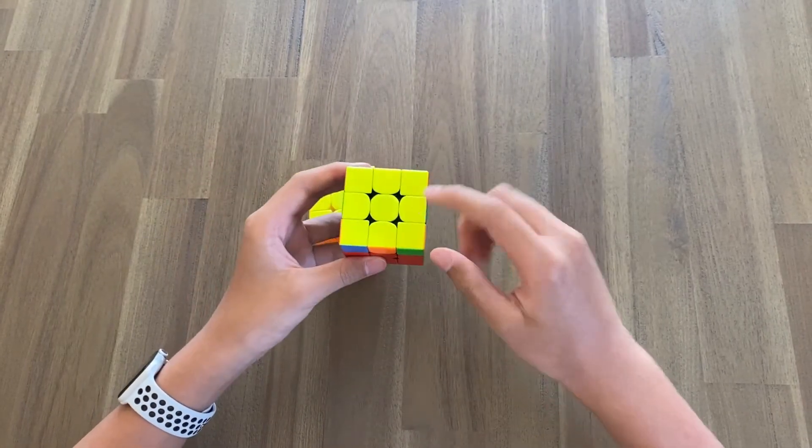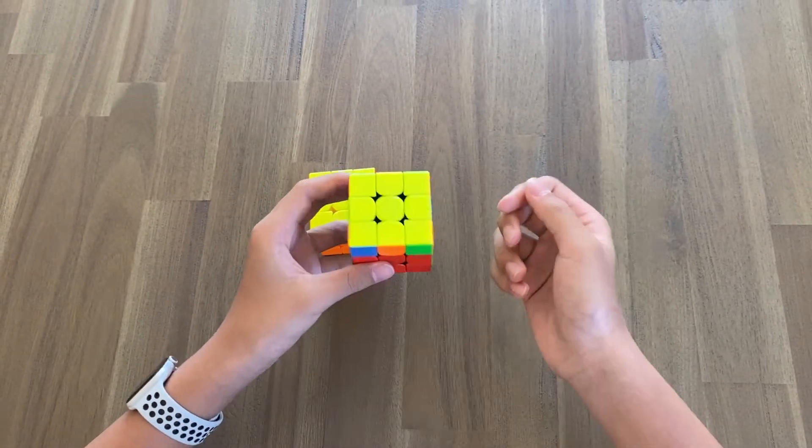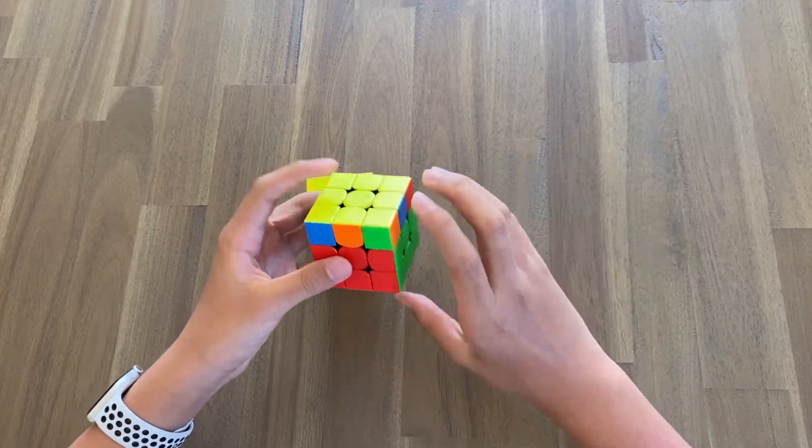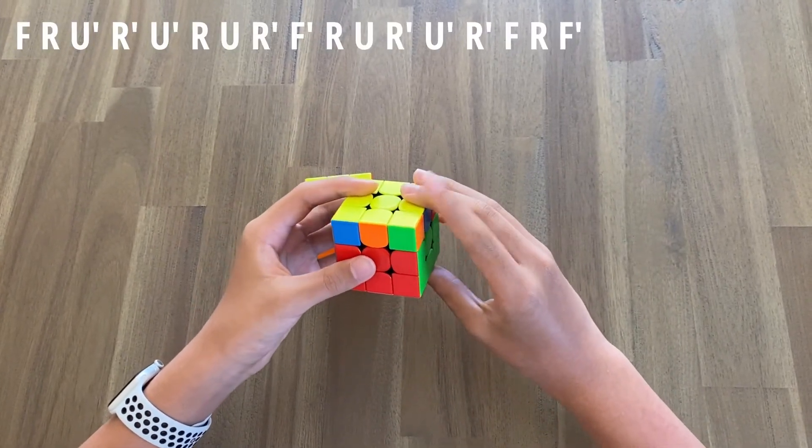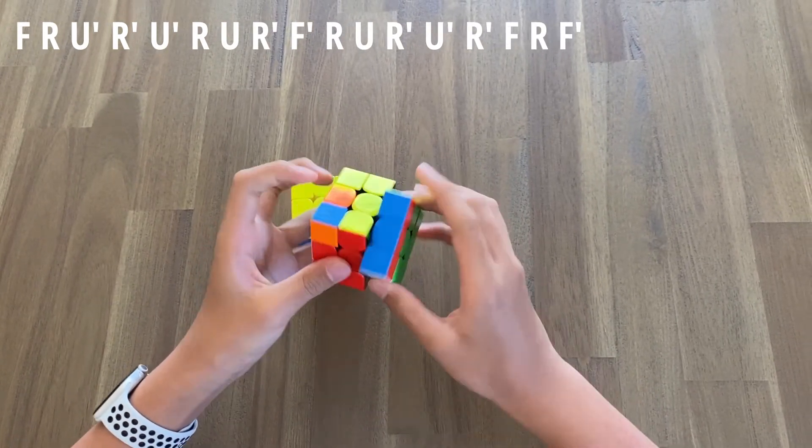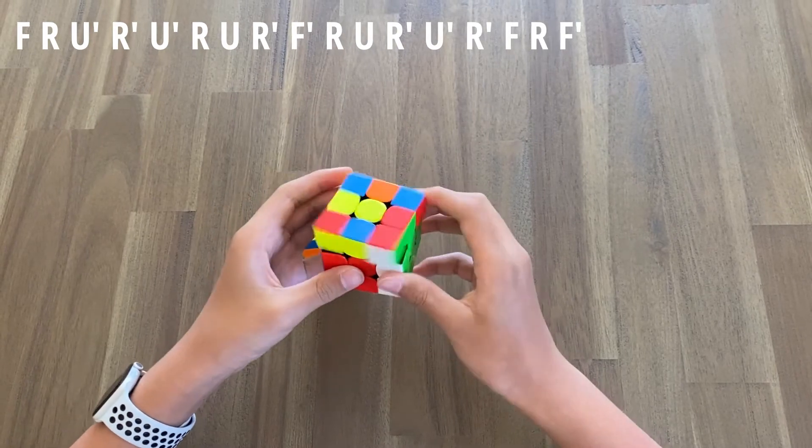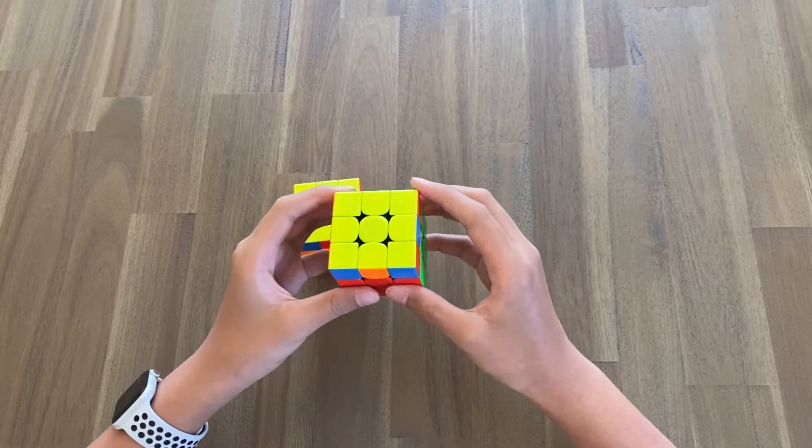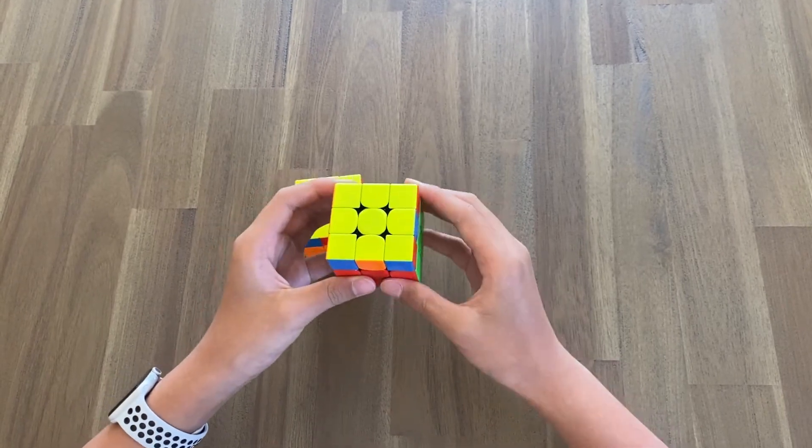When you have the corners diagonal from each other, it doesn't really matter which way you align it. The algorithm we're going to do is a Y perm. A Y perm swaps these two and these two edges, but again we don't have to care about the edges. Y perm goes like this. There we have it—all of the corners are in their home position.